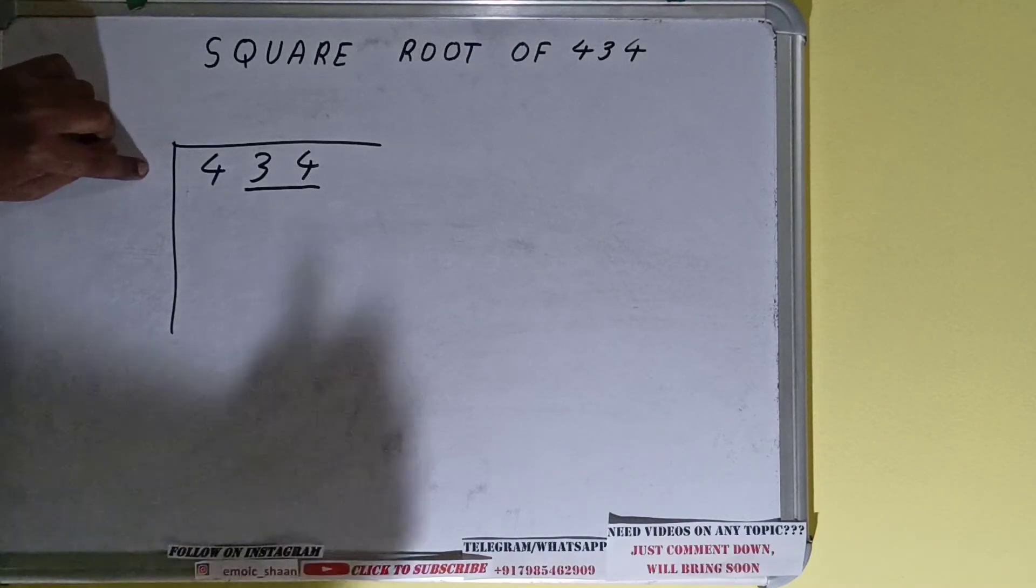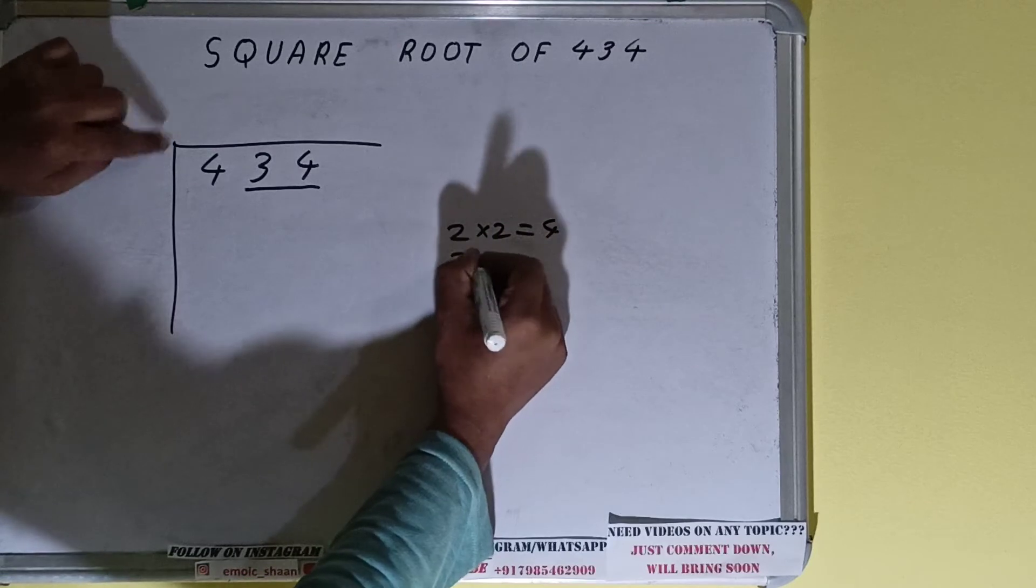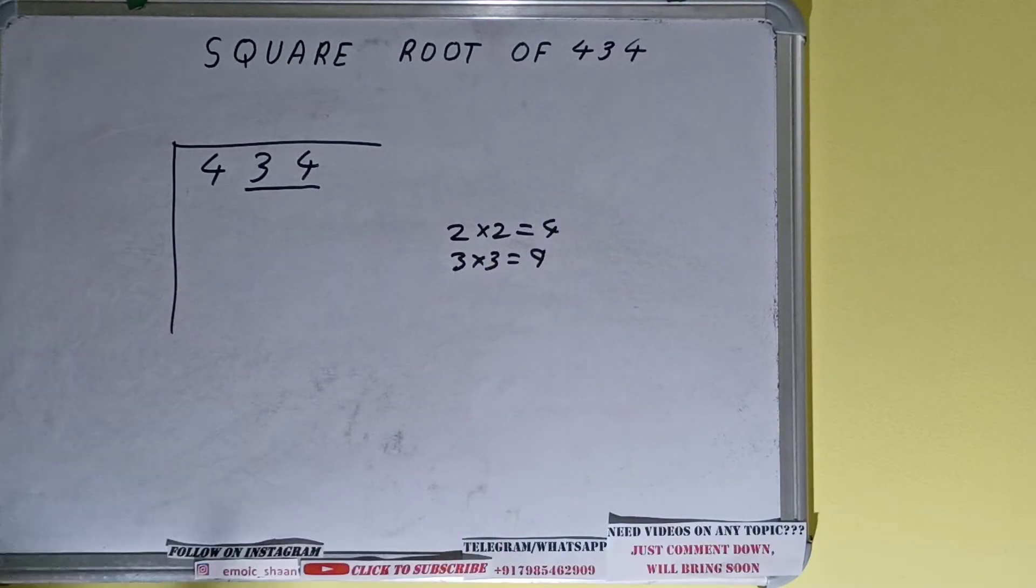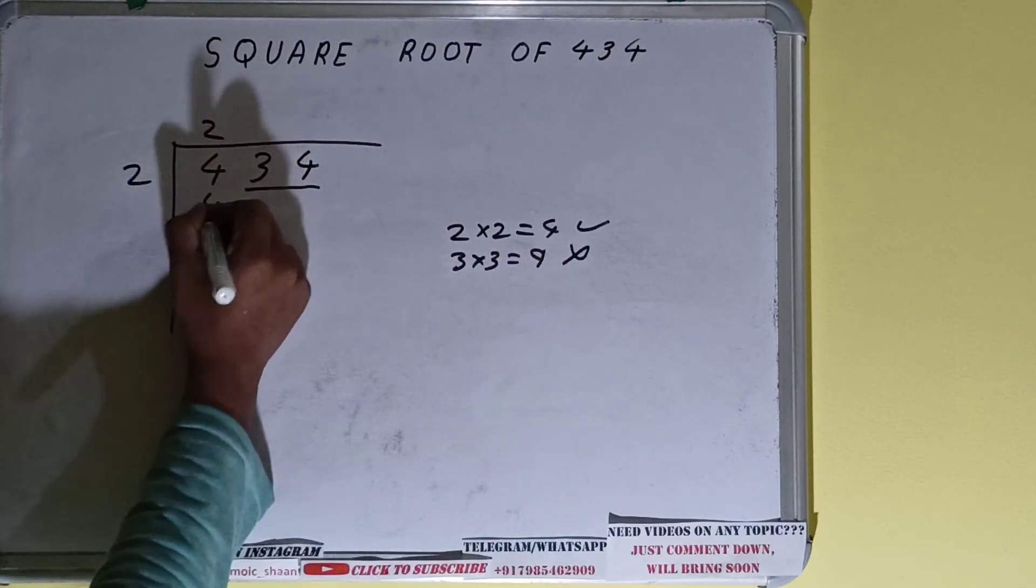If we write 2 here and 2, it will give 4. If we write 3 here and 3, it will give 9. We cannot use 9 because it is greater than 4, so we have to use this 4. So 2 here and 2 here will give 4. Subtract it and 0 will be left.